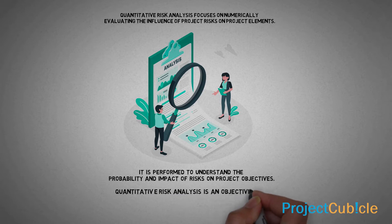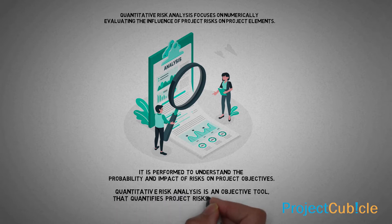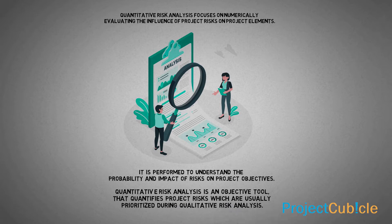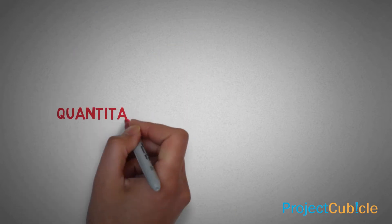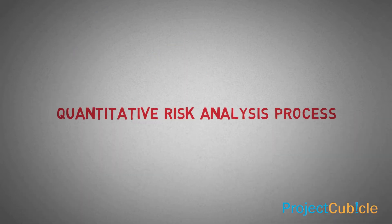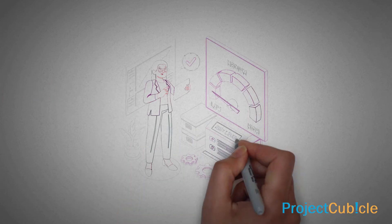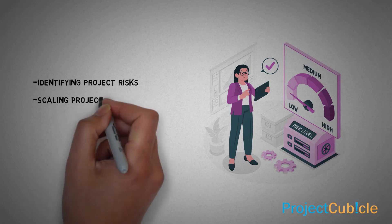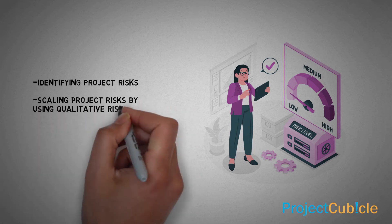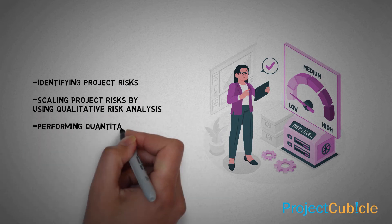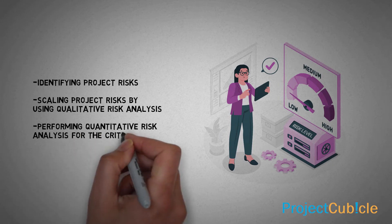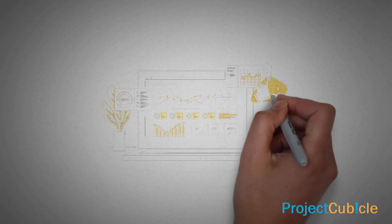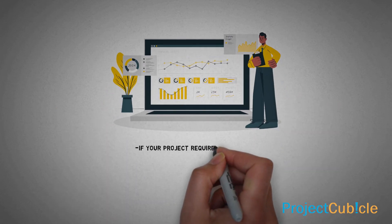Quantitative risk analysis is an objective tool that quantifies project risks, which are usually prioritized during qualitative risk analysis. The process often flows like this: identifying project risks, scaling project risks by using qualitative risk analysis, and then performing quantitative risk analysis for the critical risks.